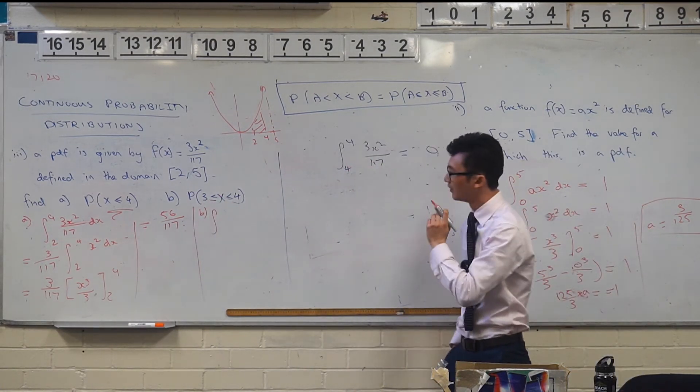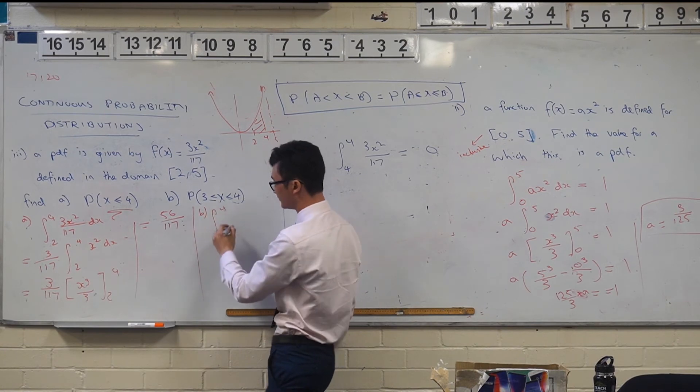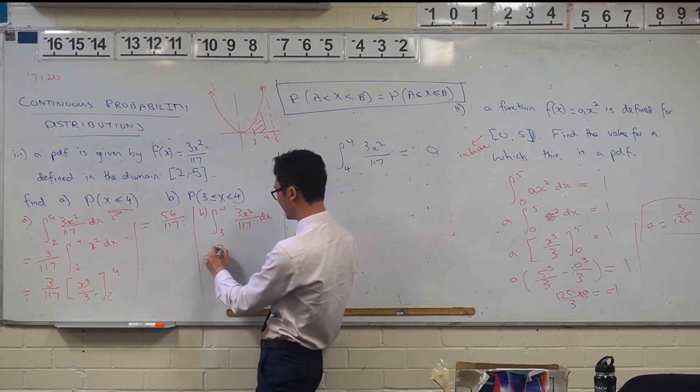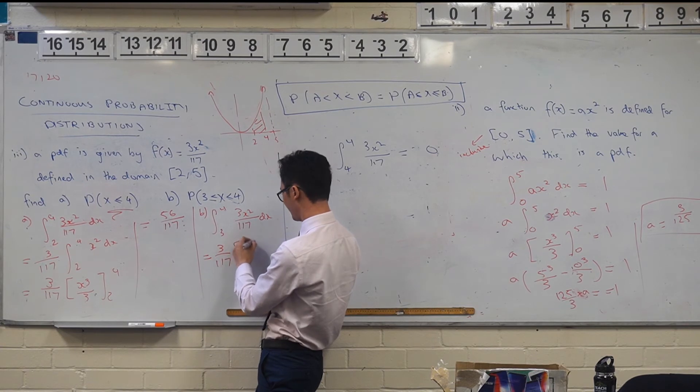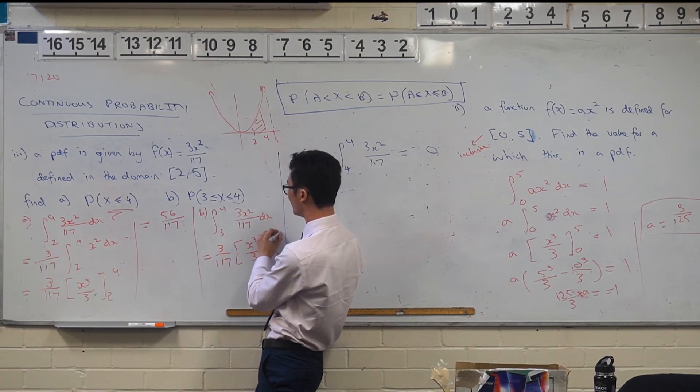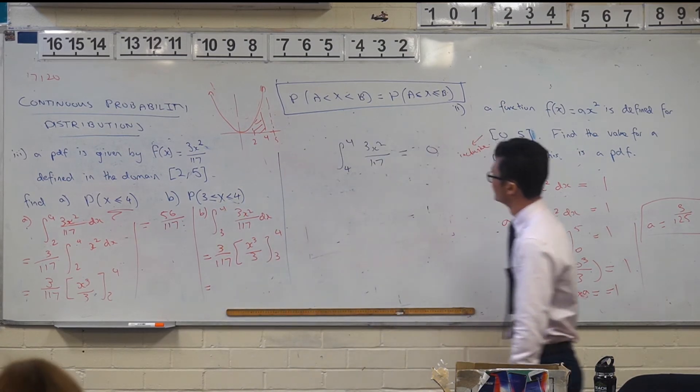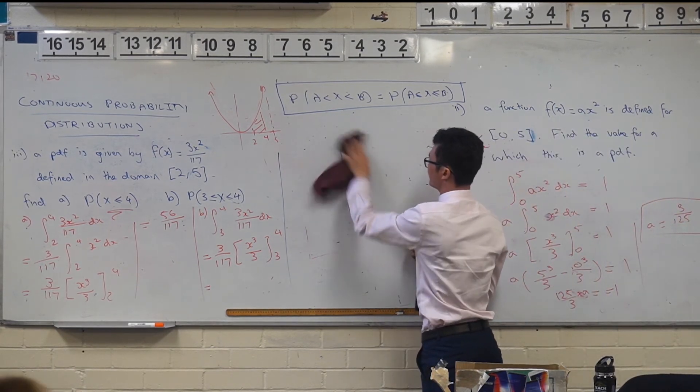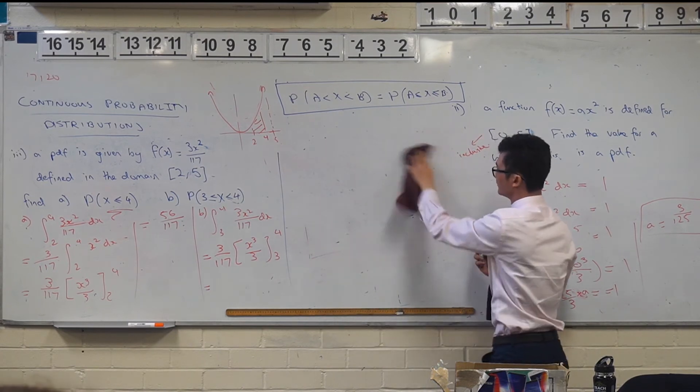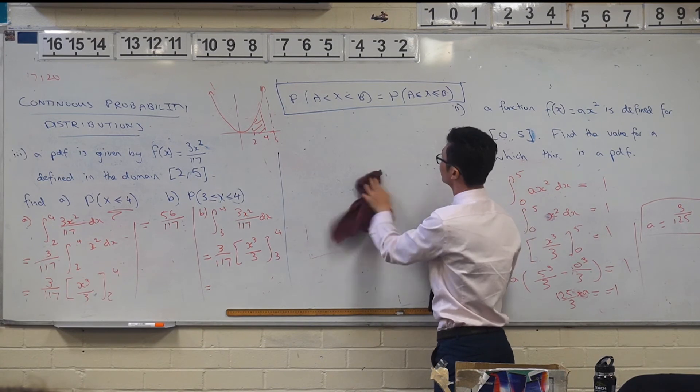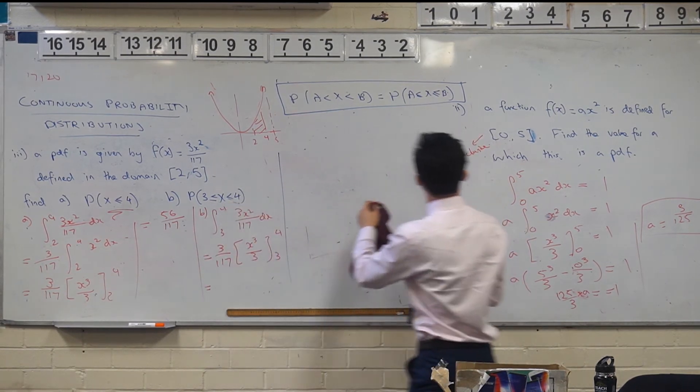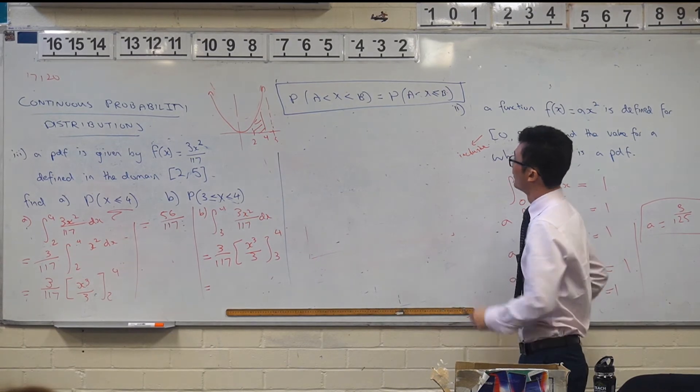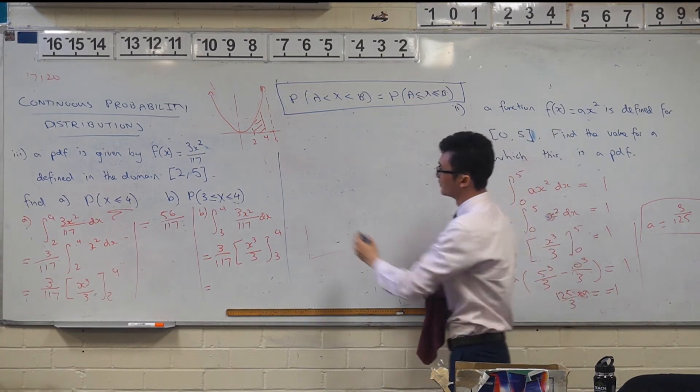Luan, what's my bounds here? Yeah, so three to four. Good. And thankfully we already have the primitive here. So it's three on one, one, seven, x cubed on three from three to four. Wait, for the formula, the one next to the A, the second A, is that less or equal to, or is that just less? The formula. This one here? Yeah, that one. So it's saying that if it's inclusive, it's the same as if it's exclusive. So is that less or equal to? Yeah, it is.